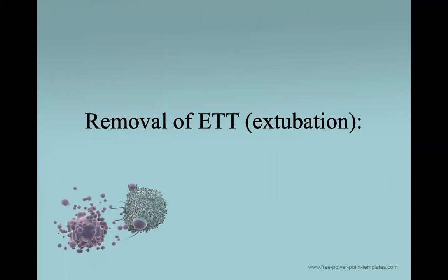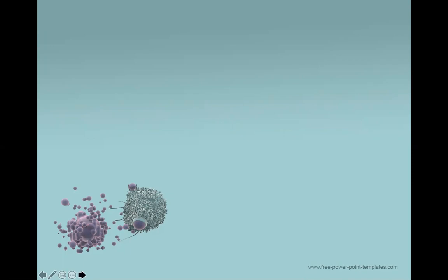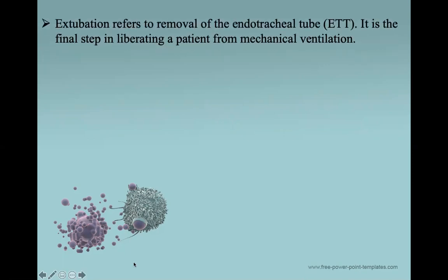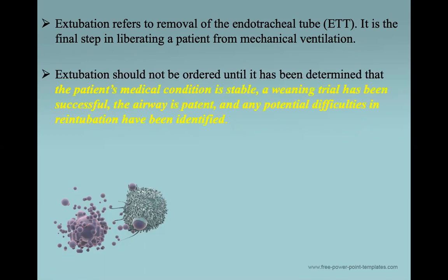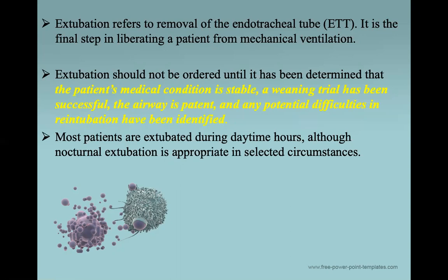Once the patient has passed everything, we are ready to remove the tube — this is called extubation, the third step. Extubation refers to removal of the endotracheal tube. It is the final step in liberating a patient from mechanical ventilation. Extubation should not be ordered until the patient's medical condition is stable, the weaning trial has been successful, the airway is patent, and any potential difficulty in re-intubation has been identified.